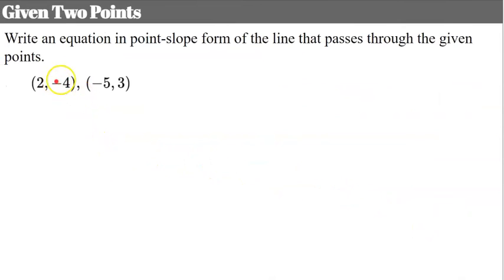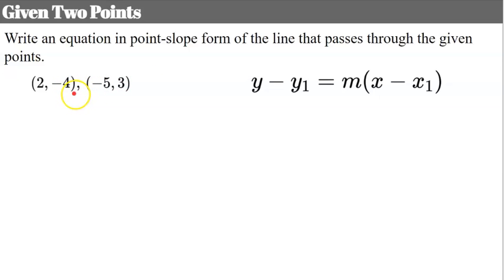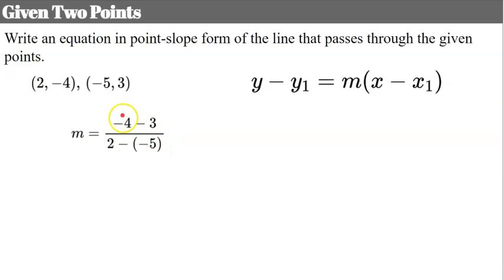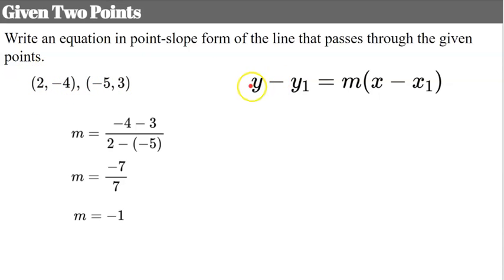You may also be given two points and asked to write the equation in point slope form. First find slope: the change in y is negative 4 minus 3, and the change in x is 2 minus negative 5, giving negative 7 over 7, which is negative 1. You could use either point — we could write an infinite number of equivalent point slope equations. For consistency, I'll typically pick the first point.